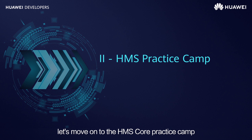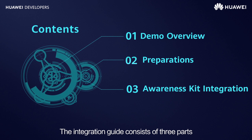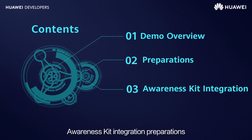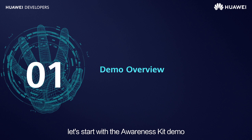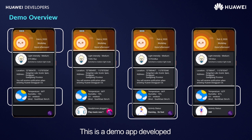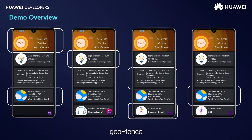Next, let's move on to the HMS Core practice section. In this part, you will learn how to integrate and call Awareness Kit. The integration guide consists of three parts: the Awareness Kit demo, integration preparations, and the integration procedure. Let's start with the Awareness Kit demo. This demo app is developed based on Awareness Kit and uses six capabilities: time, ambient light, geofence, weather, headset, and behavior.